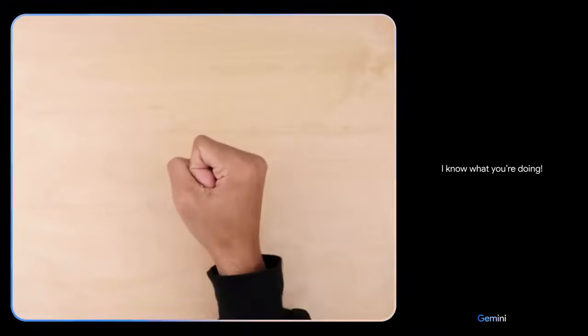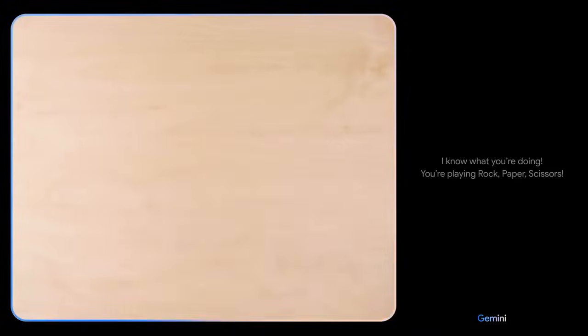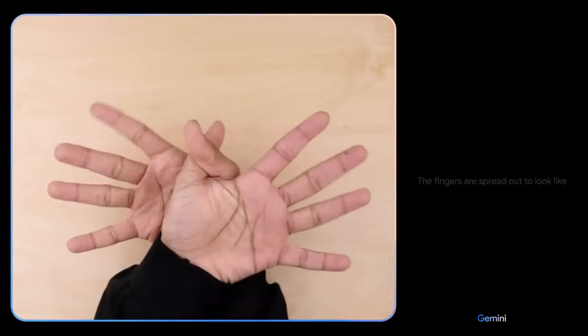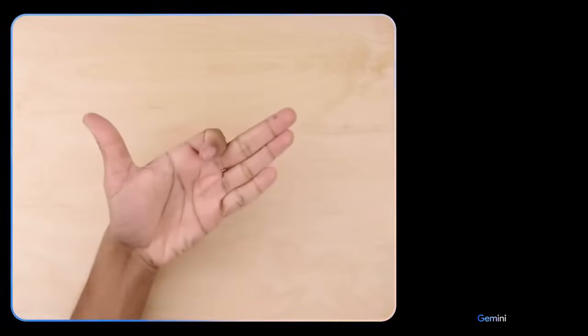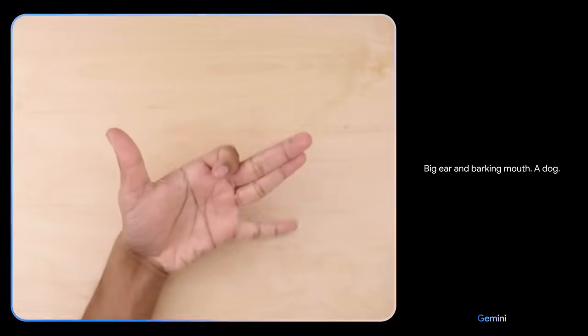I know what you're doing. You're playing rock, paper, scissors. What do you see now? The fingers are spread out to look like the wings of a butterfly. What's this? Big ear and barking mouth. A dog. Sweet.